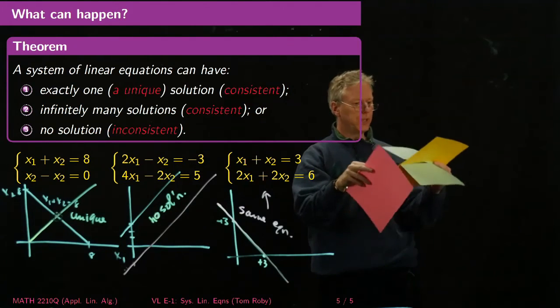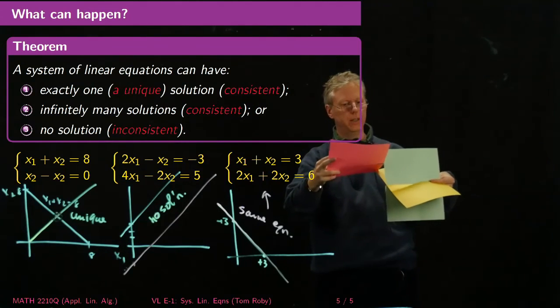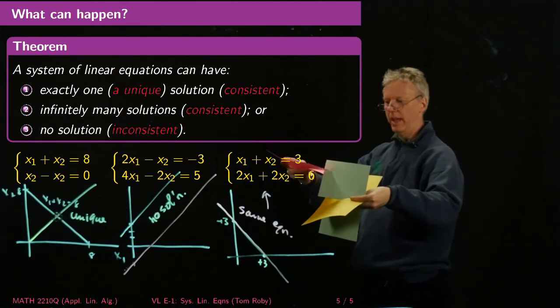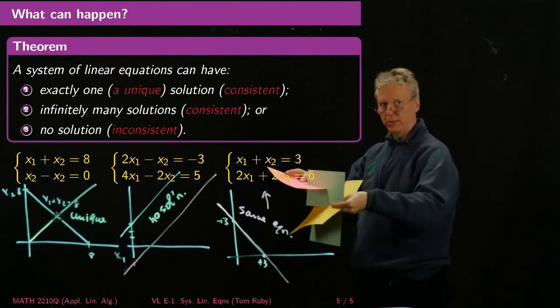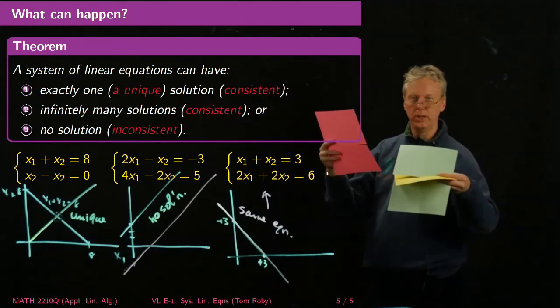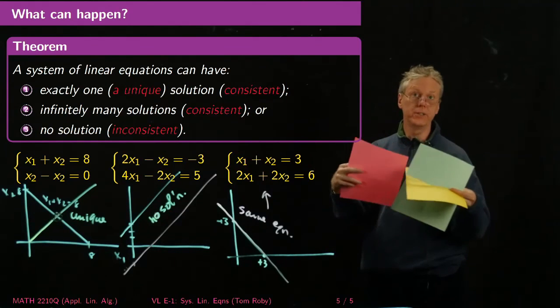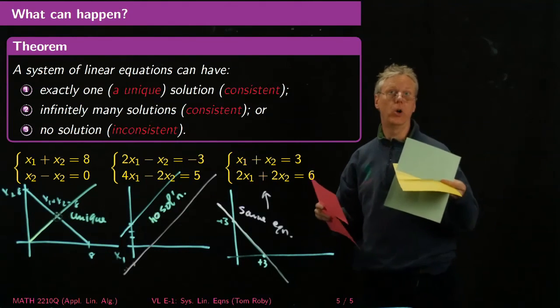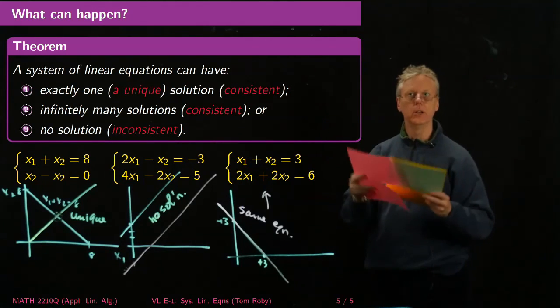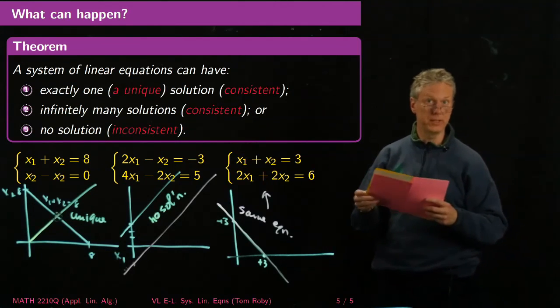And one other interesting thing that can happen is, you know, these guys can intersect in a line like this, and then this could intersect in a line here and a line there, but there's no actual triple intersection, okay? So in any case, you see that either you get a unique solution, or if they intersect in more than one point, they have to intersect in a whole line. And that's true in higher dimensions as well. So you either have a unique solution, or no solution, or infinitely many solutions, and any of those things can happen.